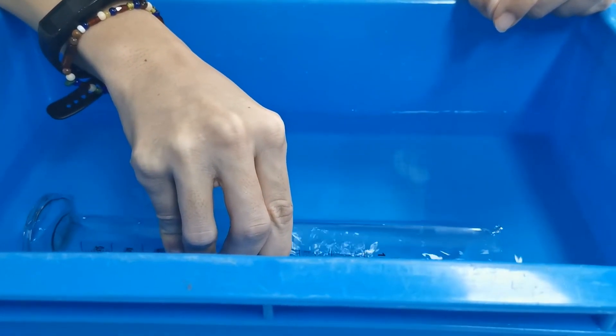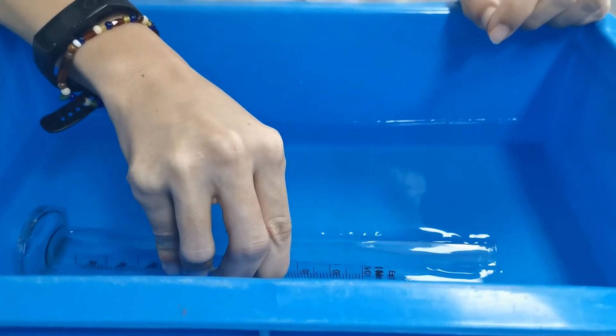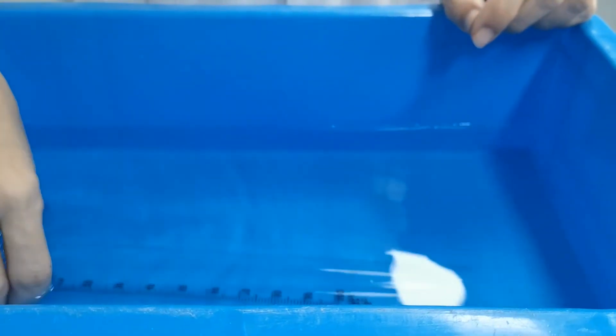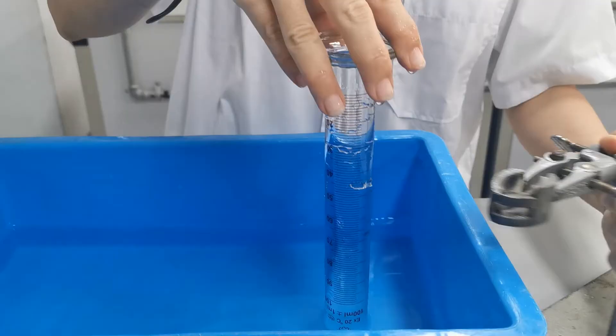After that, when you invert this, you can now secure the measuring cylinder using the clamp like this.